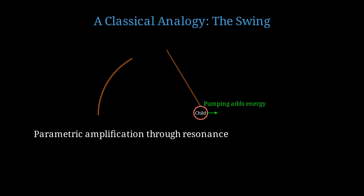By modulating a parameter of the system, in this case the position of the child's center of mass, at twice the natural frequency, you can amplify oscillations. Energy is being pumped into the swing from the child's muscles. The dynamical Casimir effect works on the same principle. The moving mirror modulates the boundary conditions at the right frequency, and this amplifies vacuum fluctuations into real photons. The energy comes from whatever is driving the mirror.